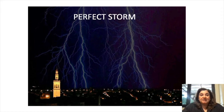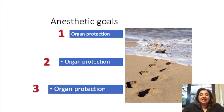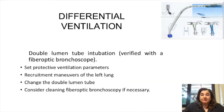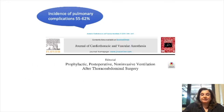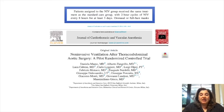I can define this as the perfect storm. The anesthetic goals are organ protection — organ protection — and above all, organ protection. Differential ventilation is necessary with double lumen tube intubation, verified with fiber optic bronchoscopy. Set protective ventilation parameters, perform recruitment maneuvers of the dependent lung, change the double lumen tube, and consider cleaning fiber optic bronchoscopy if necessary. The incidence of pulmonary complications ranges from 55 to 62%. Non-invasive ventilation in the post-operative period has shown good results.